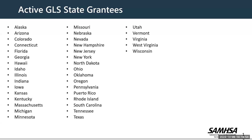Next we're going to talk about the active GLS state grantees. SAMHSA funds GLS state and tribal youth suicide prevention grants to states and tribal organizations to create and implement statewide and tribal suicide prevention plans for youth age 10 to 24. This is a list of all current state and tribal grantees. We encourage you to identify colleagues in your region or state to begin developing these partnerships. Find partners amongst your colleagues, talk to them, and learn from each other. Your GPO can help you make these connections.